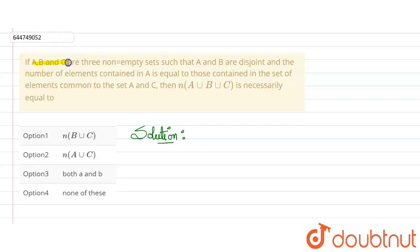Hello everyone. In this question, it is given that if A, B, C are three non-empty sets such that A and B are disjoint sets. What is a disjoint set? Two sets are said to be disjoint if they have nothing in common, no element in common. So A intersection B is zero. And the number of elements containing A is equal to those contained in the set common to set A and C. Then n(A ∪ B ∪ C) is necessarily equal to what?